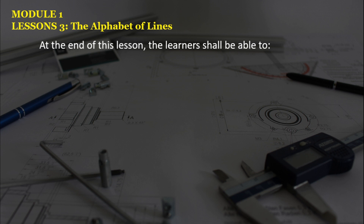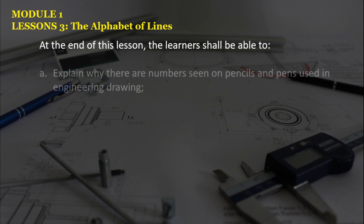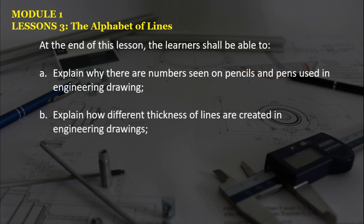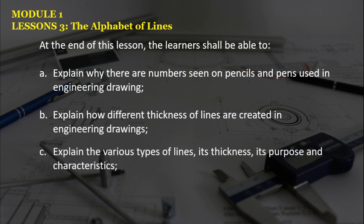In this next lesson, the learner shall be able to explain why there are numbers seen on pencils and pens used in engineering drawing, explain how different thicknesses of lines are created in engineering drawings, and lastly, explain the various types of lines, its thickness, its purpose, and characteristics.